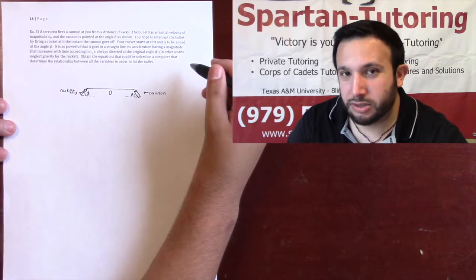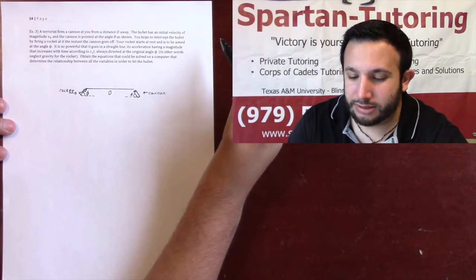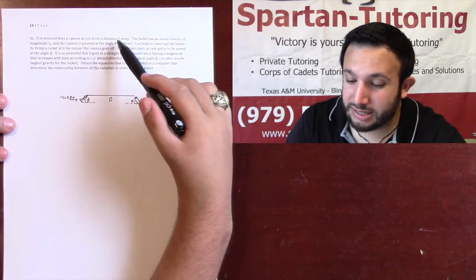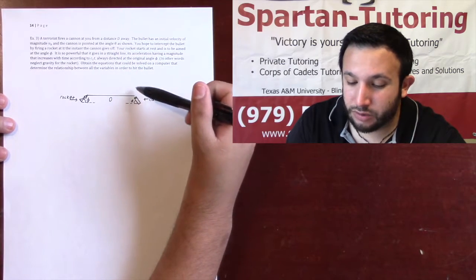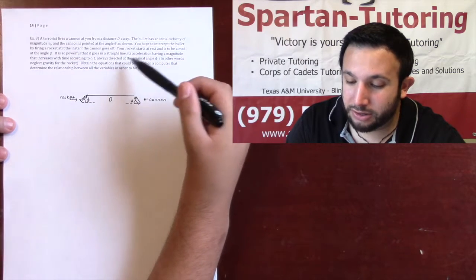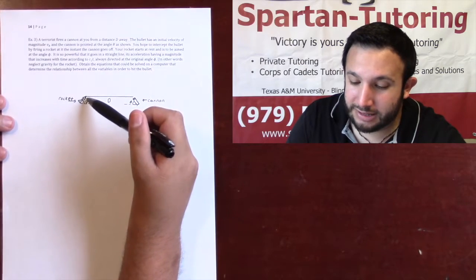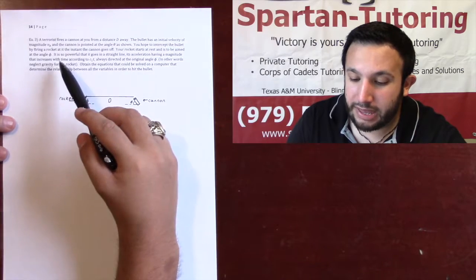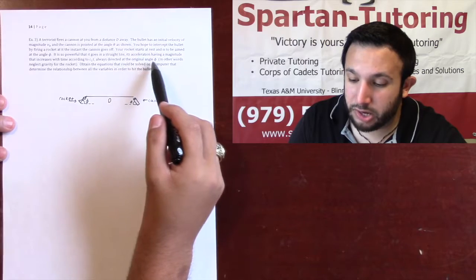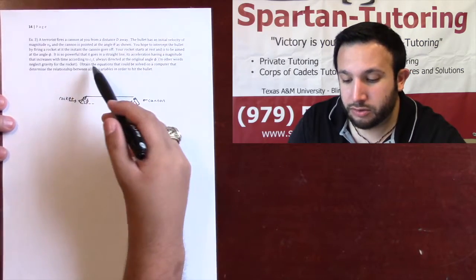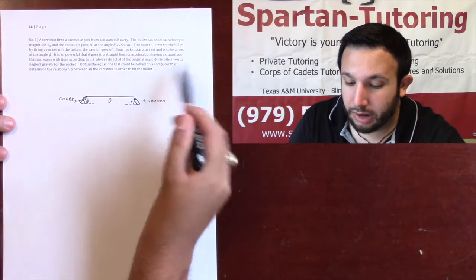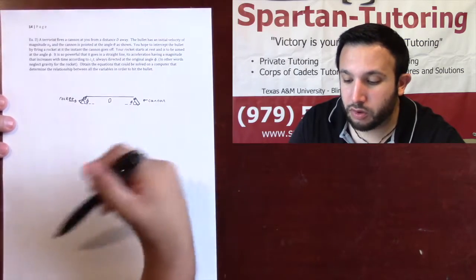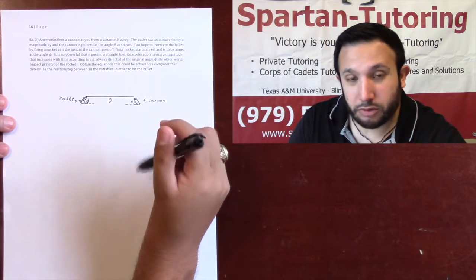In this video we're going to end 2D kinematics with the last type of problem. A cannon fires a bullet at you from a distance d away. The bullet has an initial velocity of magnitude vb and the cannon is pointed at an angle theta. You hope to intercept the bullet by firing a rocket — at the instant the cannon goes off, your rocket starts at rest, aimed at an angle phi. The rocket is so powerful that it goes in a straight line, its acceleration having a magnitude that increases with time according to c1t, always directed at the original angle phi — in other words, neglect gravity for the rocket. Obtain the equations that could be solved on a computer to determine the relationship between all variables in order to hit the bullet.